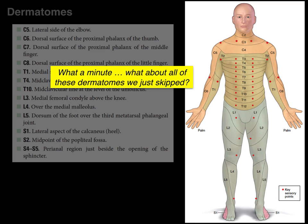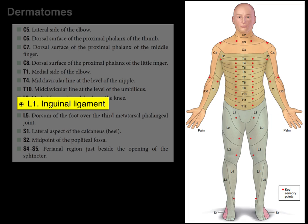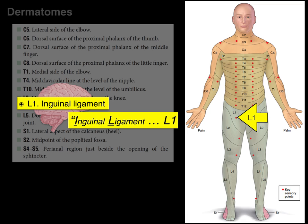What about all those dermatomes in between? If you know the nipple is T4 and the umbilicus is T10, you can guess the levels in between: skin closer to the nipple is closer to T4, closer to the umbilicus is closer to T10. I'll add L1 because it was left out: L1 is the inguinal region, at the inguinal ligament — I remember this as 'IL for L1.'